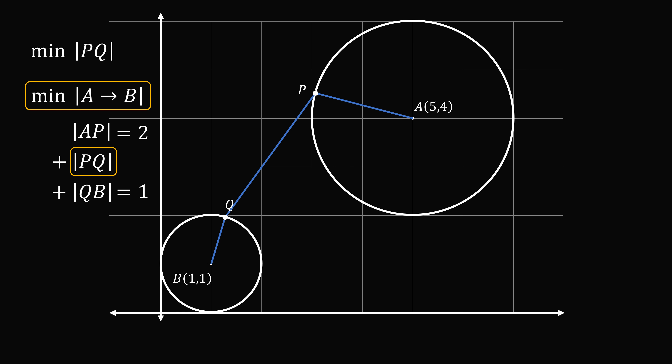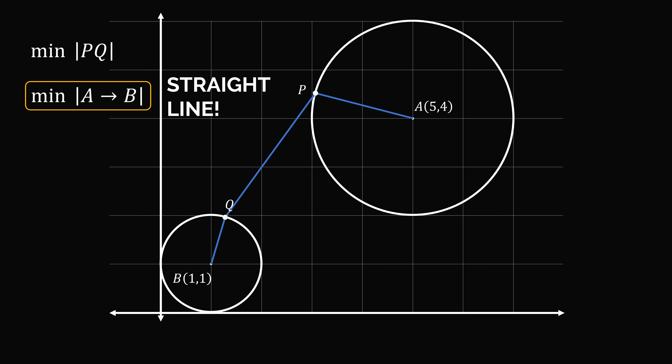The minimum distance between two points in the plane is a straight line. So we construct the straight line segment AB. The intersection of this line segment with circle A will be point P, and the intersection with circle B will be point Q.